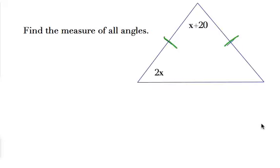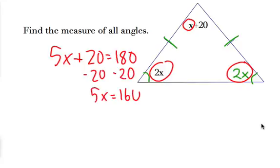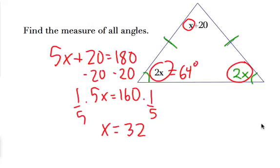They tell us this is isosceles. So if this angle is 2x, the base angle is also 2x. All together we have 2x plus 2x plus x plus 20 equals 180 — that's 5x plus 20 equals 180. So 5x equals 160, giving x equals 32. That makes the two base angles 64 degrees each and the top angle 52 degrees.